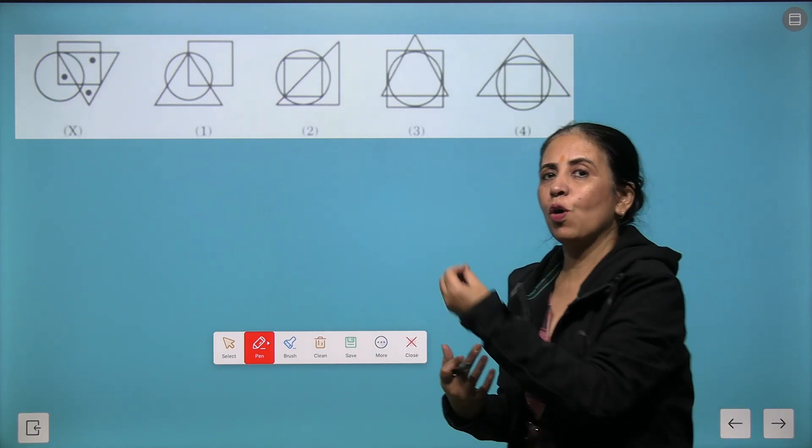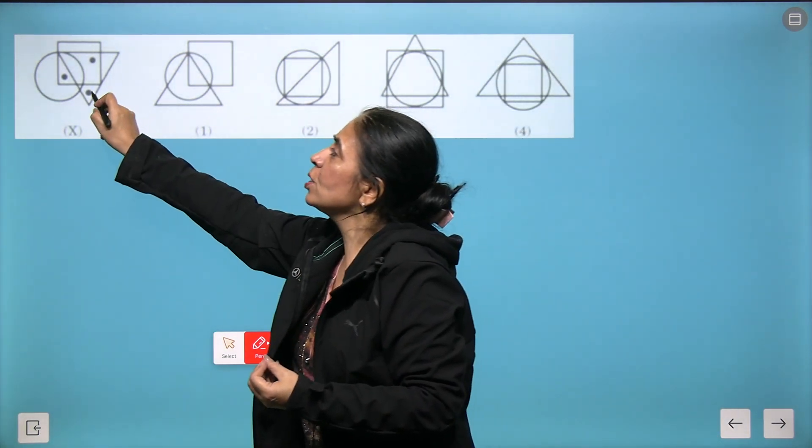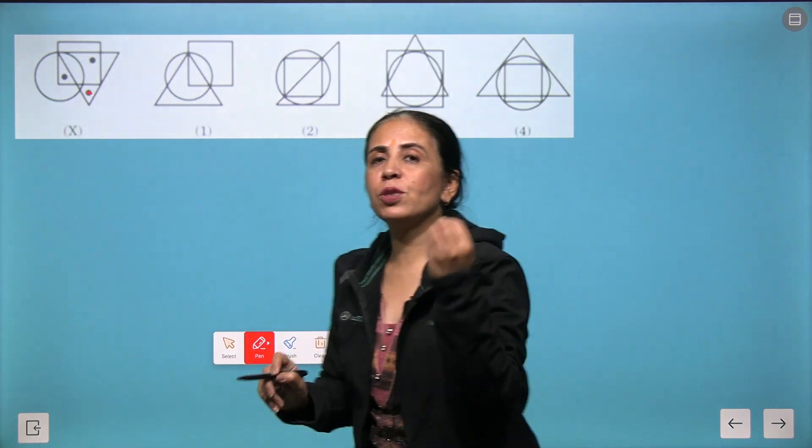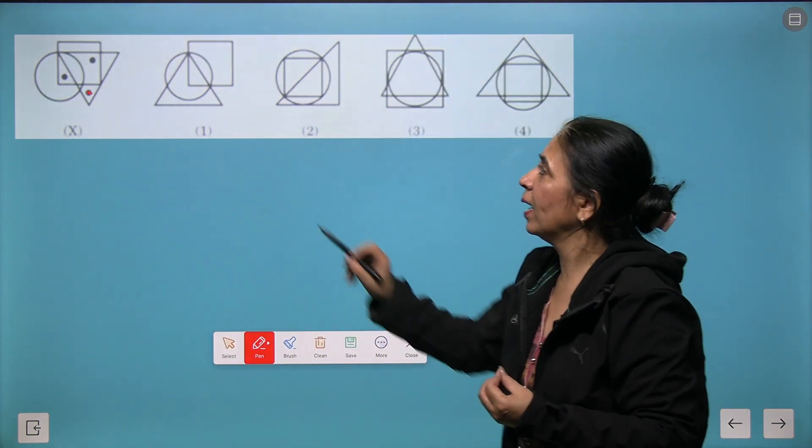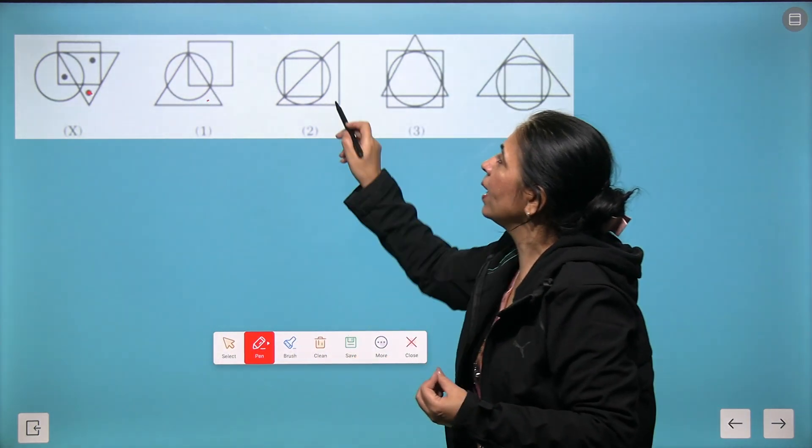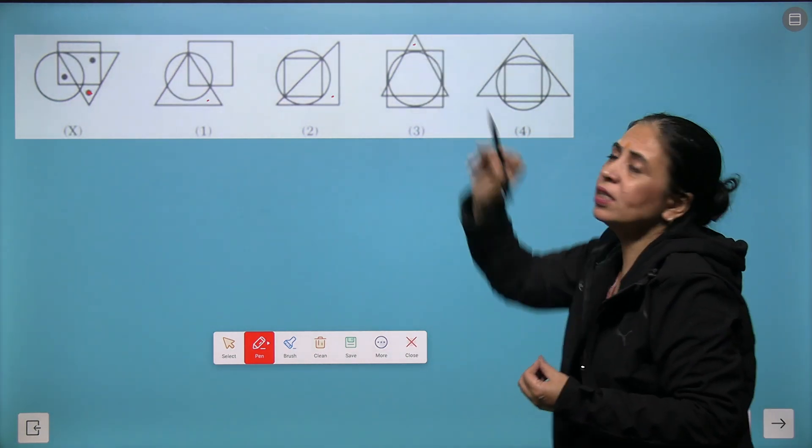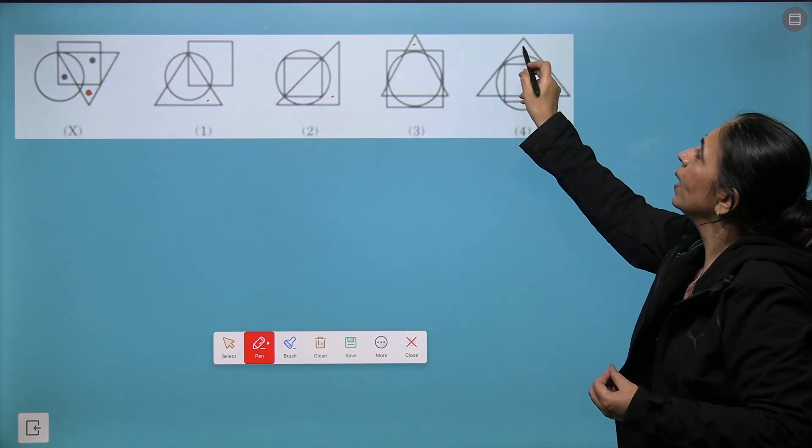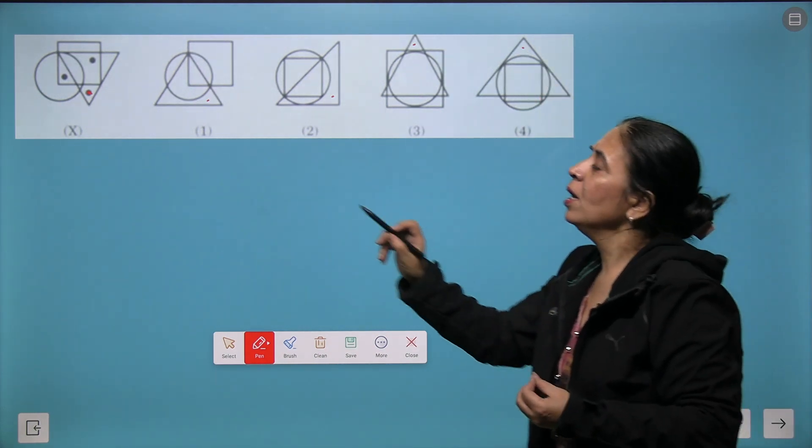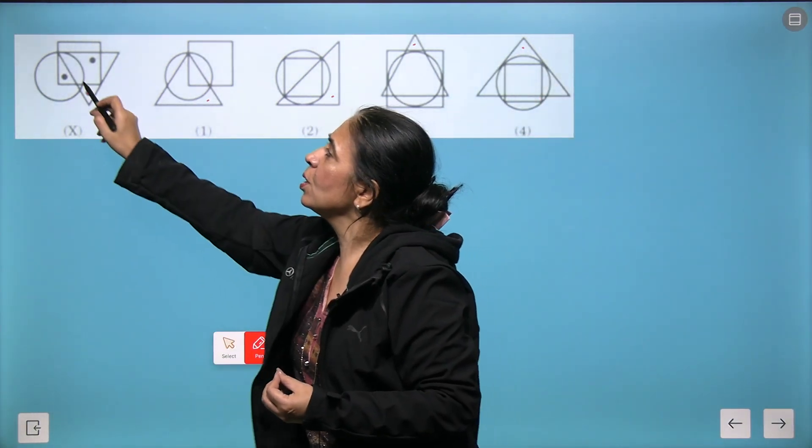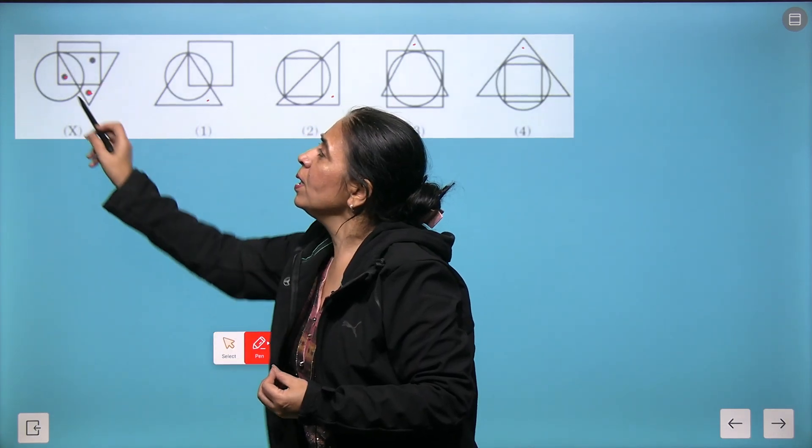Let's look at the first option. We have a dot in the triangle. Let's put a dot here in the triangle. Another dot comes in this triangle. We put a dot in this triangle, and we can put a dot in this triangle. So this one is done.